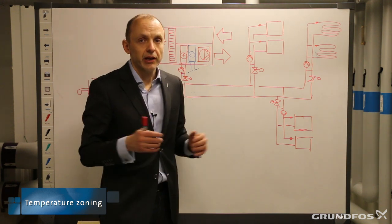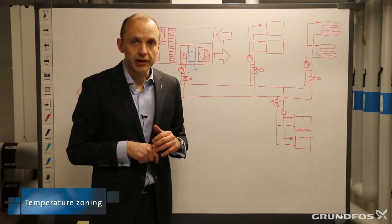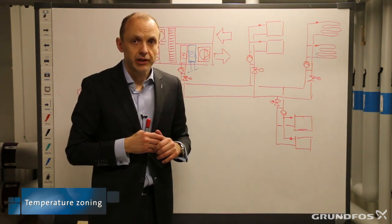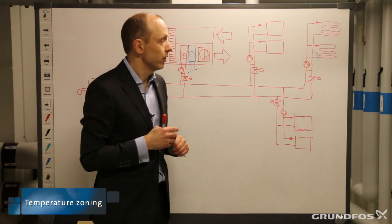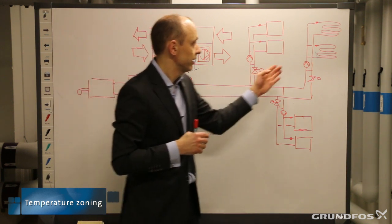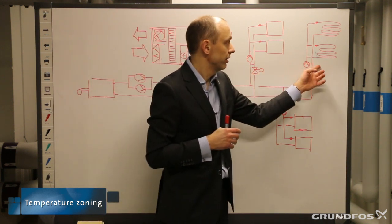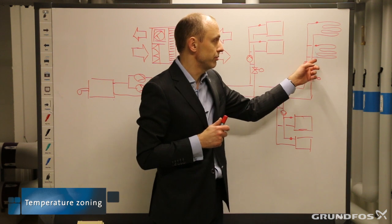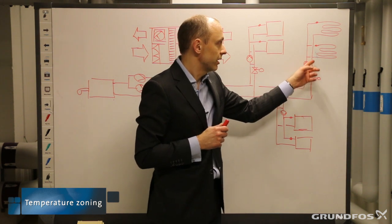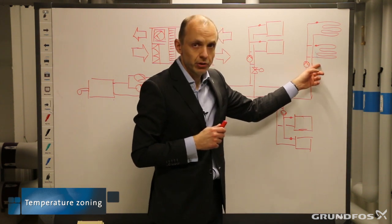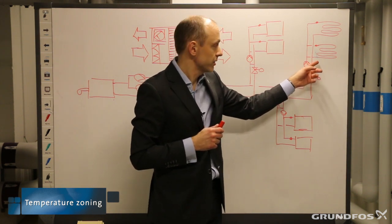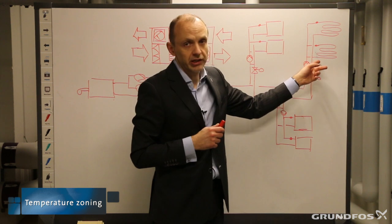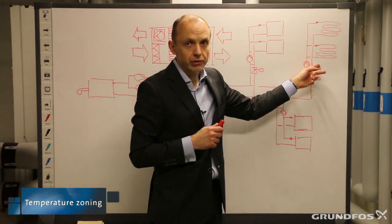That gives better controllability in the system. And also on the floor heating system, we have the opportunity to reach the desired temperature, which is typically 40 degrees Celsius.